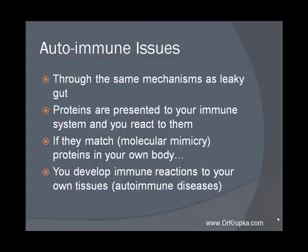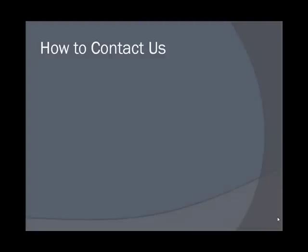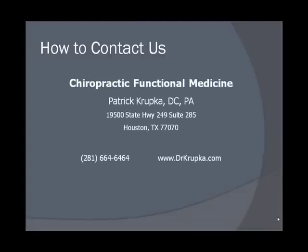As long as you continue presenting these proteins to the immune system, you will continue to make antibodies that attack your own tissues. This is an important concept for those of you dealing with autoimmune problems — you likely have some sort of underlying gut issue that needs to be resolved. That does it for intestinal dysfunction. There are other things that can go wrong, but that gives you a general idea of the main categories of problems we deal with in the office on a regular basis. Our contact information is here — drkrupka.com is the website. We appreciate you watching, and I'll see you on the next video.